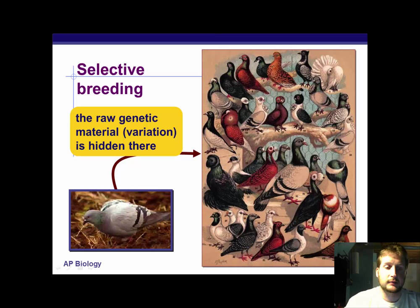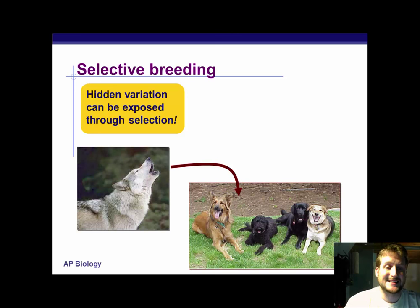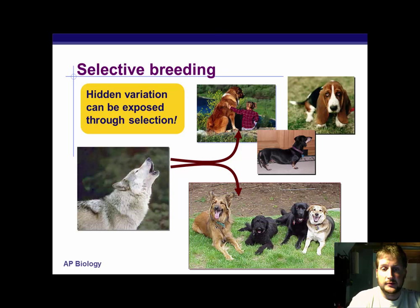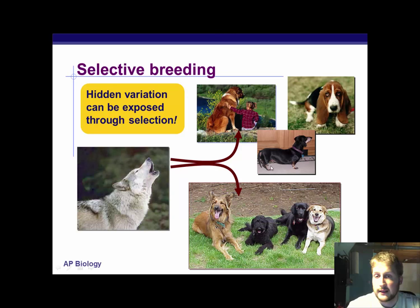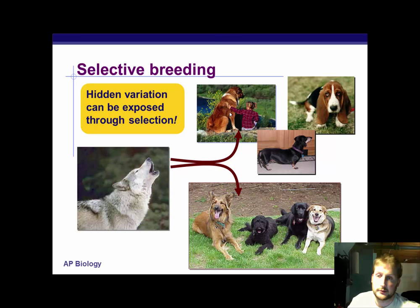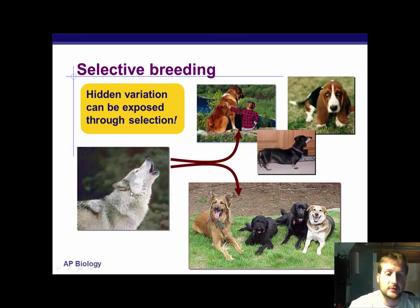Hidden variations can be exposed through selection. All dogs descended from the wolf, and a lot of the variations we now have with dogs were all selected based on human needs and characteristics — whether it be very large or very small dogs, dogs designed in Egypt to run extremely fast, dogs that are extremely long, dogs built for protection, or dogs like the St. Bernard, which was designed to go find people stuck in avalanches and dig them out. All these guys stemmed from the wolf. Even within the wolf, there are tons of hidden variations that just aren't being exposed, and by selective breeding you can take your largest dogs and keep breeding them together to get even larger dogs. There's tons of genetic variation within any given species.